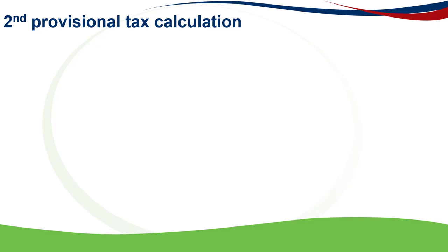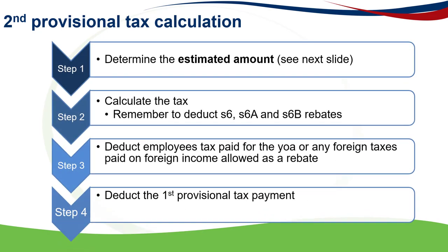The second provisional tax payment can be calculated using the following steps. The first step is to determine the estimated taxable income amount, similar to the first provisional tax payment calculation. However, the estimation of the amount is slightly different and we will discuss that in the next slide. The second step is to calculate the tax, similar to the first provisional tax payment — remember to deduct any rebates that would be applicable. The third step is to deduct the employee's tax paid for the year of assessment, as well as any foreign taxes paid. And then lastly, to deduct the first provisional tax payment that was done.